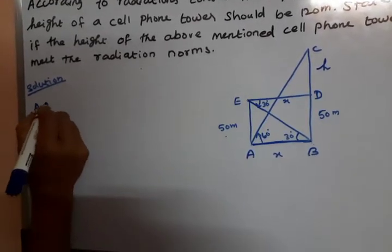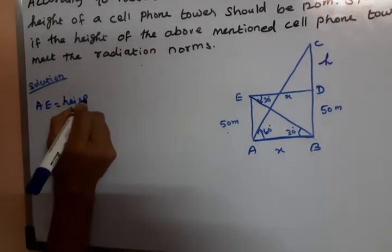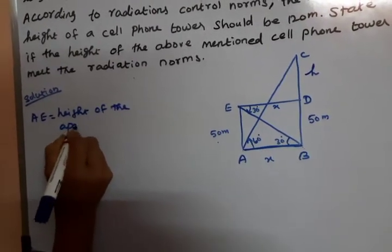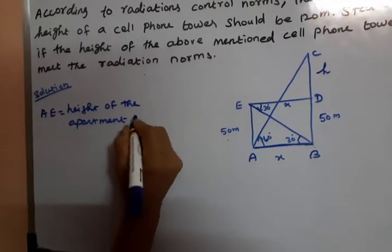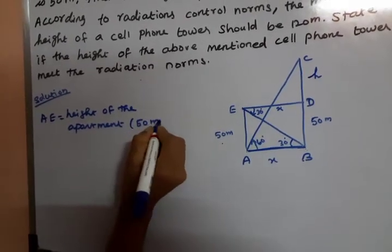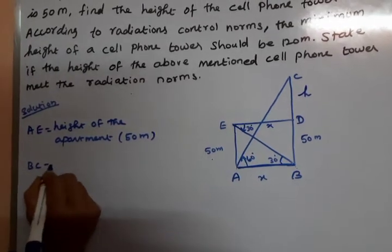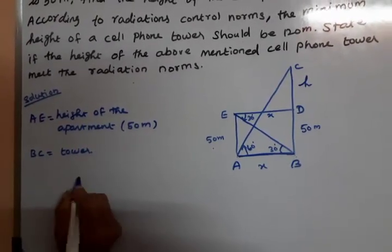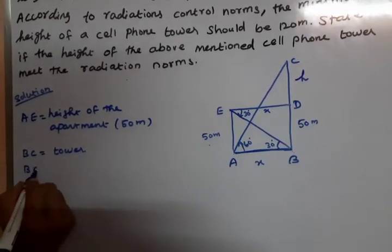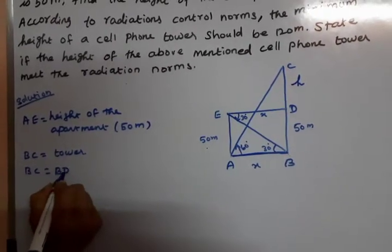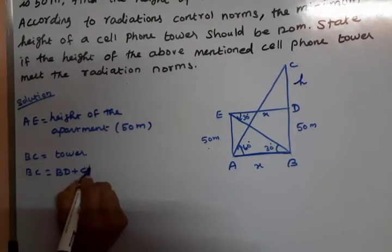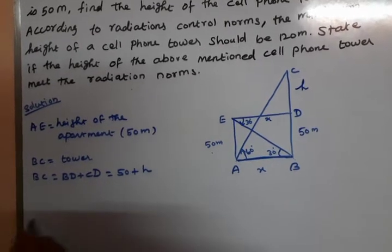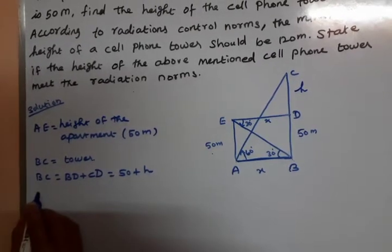AE is the height of the apartment, which is 50 meters. BC is the cell phone tower height. BC equals BD plus CD, that is 50 plus h meters.